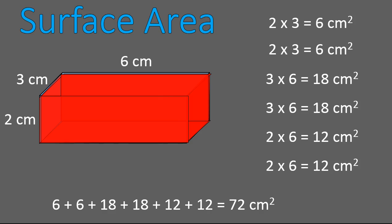I've got the two ends, 6 plus 6, 18 plus 18 for the top and bottom. Front and back, 12 plus 12. And that gives me a total of 72 square centimeters as my surface area. So that's how much paint it would take to completely cover this in red.